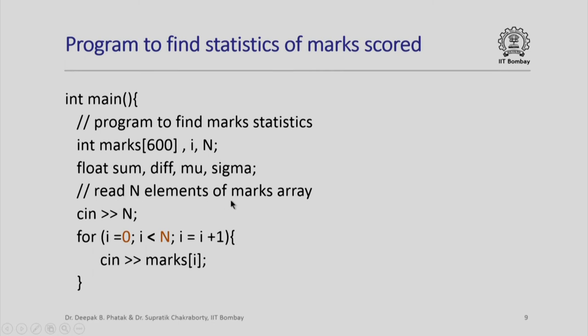Next, we read n elements of the marks array. So we read the value of n. Notice once again the for iteration control: i equal to 0 to i less than n. This iteration will read all the n marks.